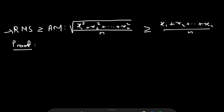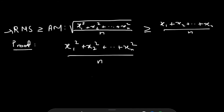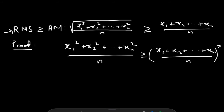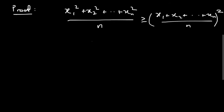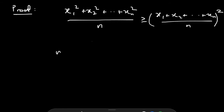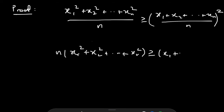To work backwards on this inequality, let's square both sides to get rid of the square root. Doing that, we get (x₁² + x₂² + … + xₙ²) / n ≥ (x₁ + x₂ + … + xₙ)² / n². Now if we multiply both sides by n², we end up with n·(x₁² + x₂² + … + xₙ²) ≥ (x₁ + x₂ + … + xₙ)².